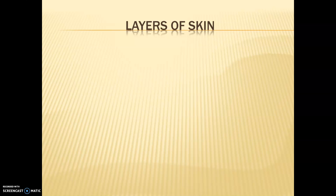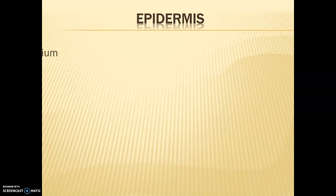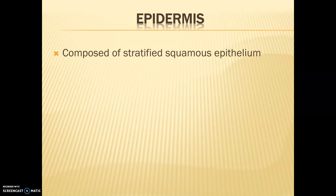Now we're going to get into the different layers of skin. The different layers are our epidermis, our dermis, and our last one — not listed here but we're going to talk about — is our subcutaneous layer. Our epidermis is made of different types of stratified squamous tissue, and there are different layers within this stratified squamous epithelium that we're going to talk about as well.